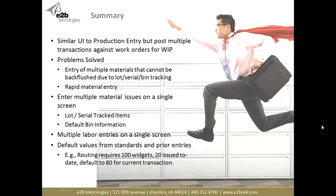With Batch Process Production Entry, we can have all the default values brought into our entry grid. There could be a hundred different materials that are part of that entry, and then you get to do the distribution on those — to pick the lot and serial numbers — much faster than doing one material entry at a time. You can do this all in a single screen: lot/serial tracked items, default bin information, and multiple labor entries on one screen, so instead of doing a labor entry, then another, then another, you can do them all at once and post them all at the same time.